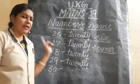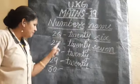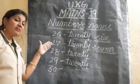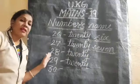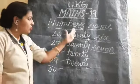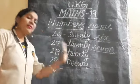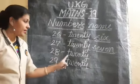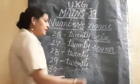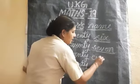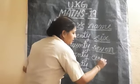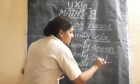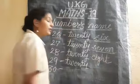Do you understand? We will change the number and change the spelling of the last part. The twenty part is the same for 21 to 29. For 28: T-W-E-N-T-Y E-I-G-H-T.